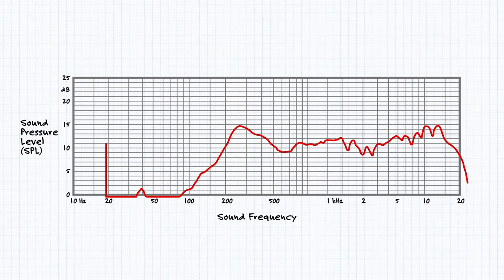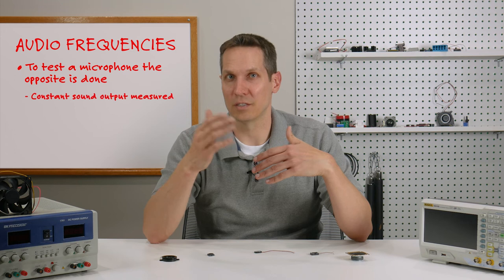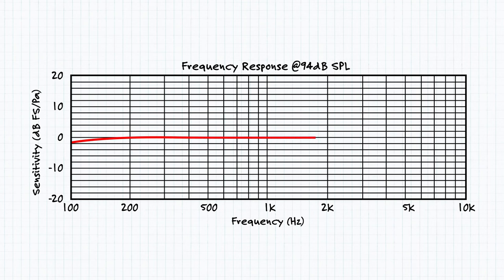As a 77mm speaker, this response is what we'd expect. To test a microphone, the opposite is done, with the constant sound output measured and the microphone response measured. Microphones tend to have a more linear and wide-ranging response than speakers.